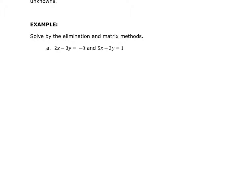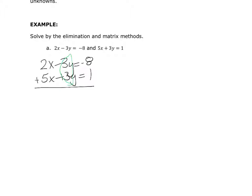If we're asked to solve by the elimination method, the first thing we do is rewrite the two equations on top of each other: 2x minus 3y equals negative 8, and 5x plus 3y equals 1. I can see right away that if I add these two equations, the y's will be eliminated because one is negative 3y and the other is positive 3y. Adding gives 7x plus 0y equals negative 7. Dividing both sides by 7, x equals negative 1.